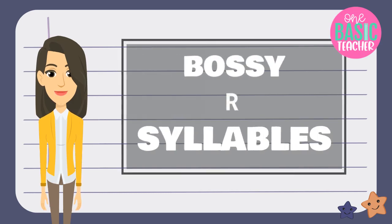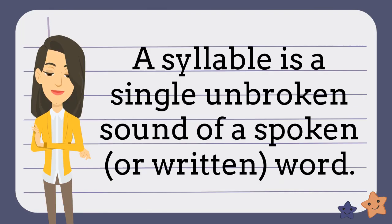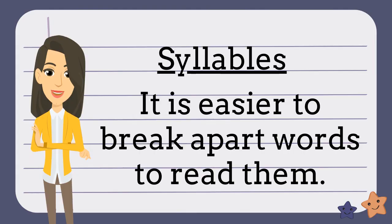In this episode, we'll discuss how to syllabicate bossy-R words. Did you know that a syllable is a single sound of a spoken or written unbroken word? Some words have more than one syllable. When you are trying to read words that have many syllables, it might be hard to do. So we can break the word apart to make it easier to read.